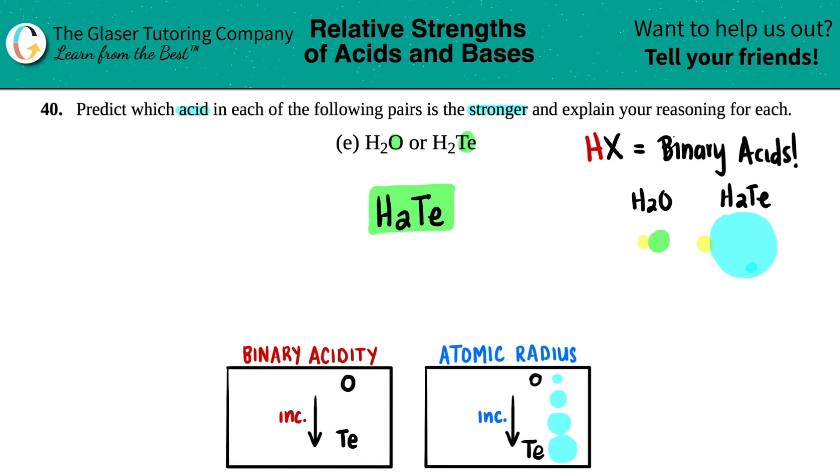Now look at the bonds between the oxygen and the hydrogen—very very close together because the atoms are small. But if we look at the bonds in H and tellurium, it's a much longer bond.